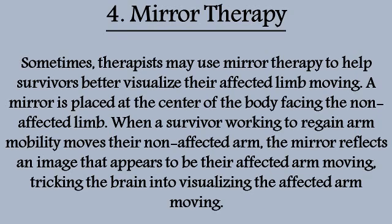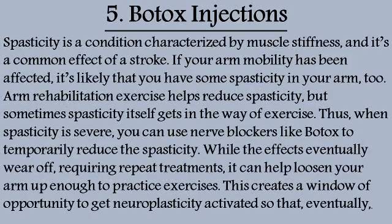Method 4: Mirror Therapy. Sometimes therapists may use mirror therapy to help survivors better visualize their affected limb moving. A mirror is placed at the center of the body facing the non-affected limb. When a survivor working to regain arm mobility moves their non-affected arm, the mirror reflects an image that appears to be their affected arm moving, tricking the brain into visualizing the affected arm moving.